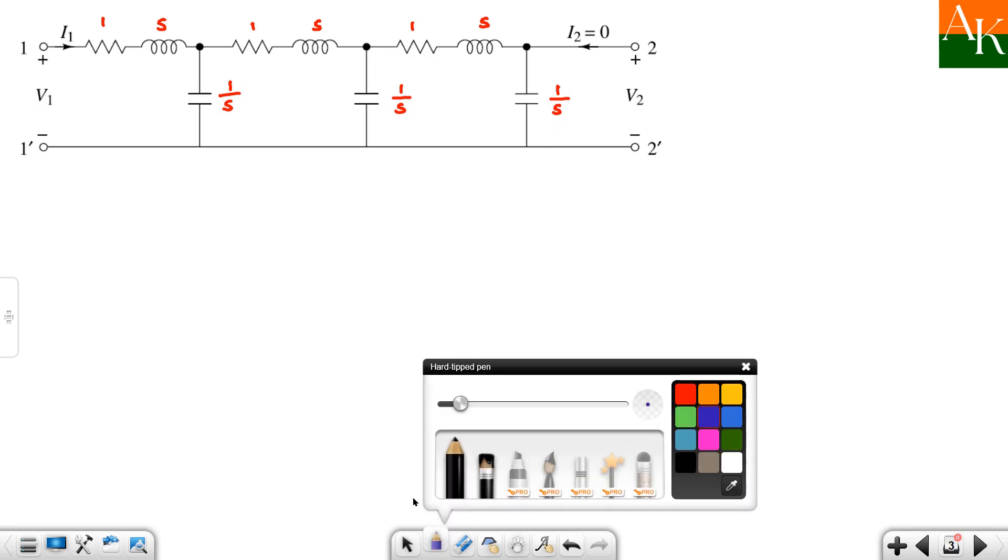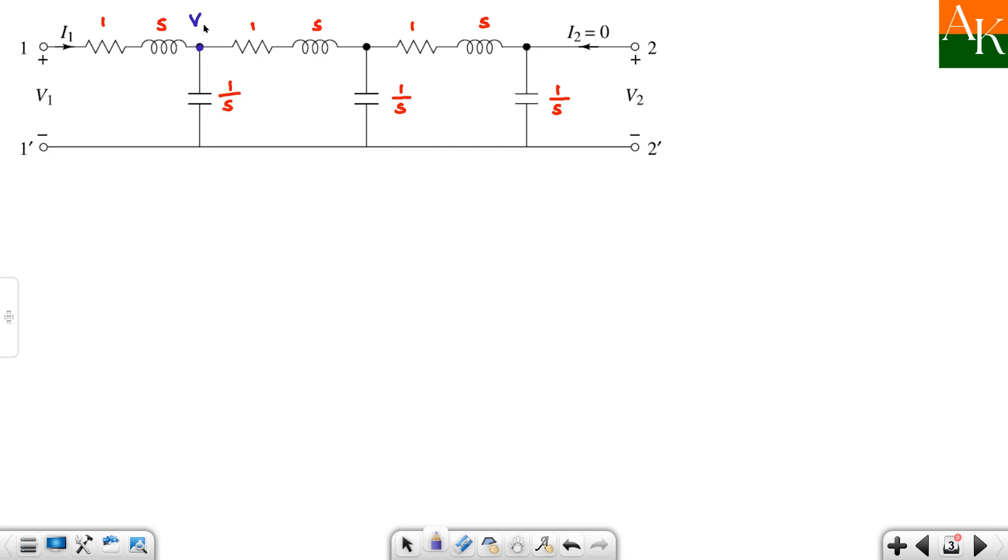Now we have to assign the voltages and currents. Here we have v1, i1. So here we assign the voltage as va, current as ia. Voltage as vb over here, current as ib over here. And here the voltage is vc and i2 is equal to 0 already as mentioned. So you have assigned 3 voltages and 2 currents.